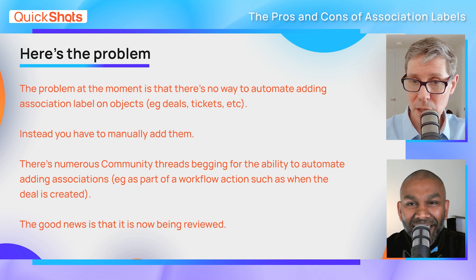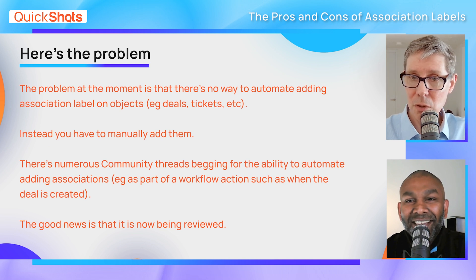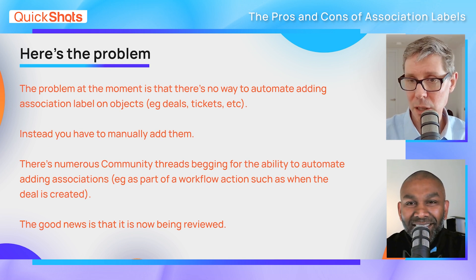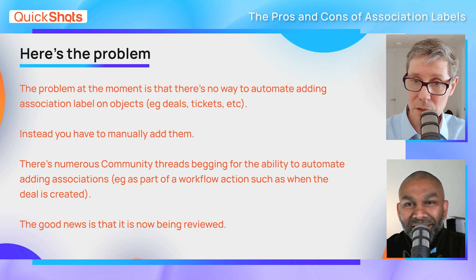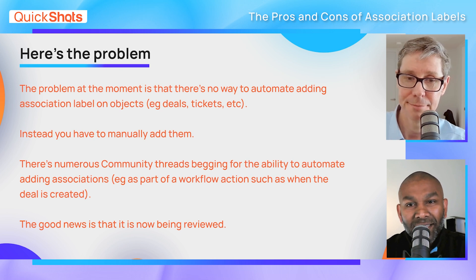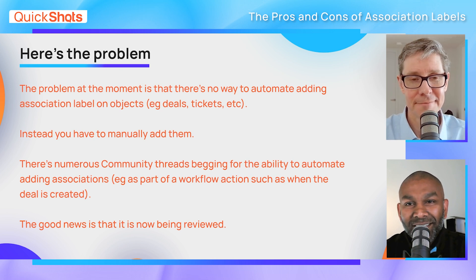That's slightly different - you might have a deal workflow or a ticket workflow and you only want to contact certain associated contacts, not all of them. Again, association labels would be really handy there. The problem remains that you've got to manually add those associations, but this is a great start - it really is a great start.